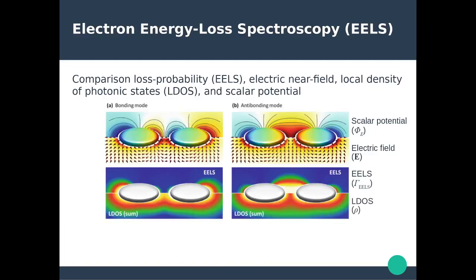Comparing different physical quantities reveals the similarities. This figure compares the loss probability (probed using EELS) with the local electric near field, the local density of photonic states, and the scalar electric potential, for both a bonding mode and an anti-bonding dipole mode of a dimer of disks. The EELS correlates very well with the scalar electric potential: for the anti-bonding mode, you see a strongly positive electric potential in the gap, which is where you have the strong loss probability; for the bonding mode, the positive and negative cancel out, giving no loss probability in the gap.